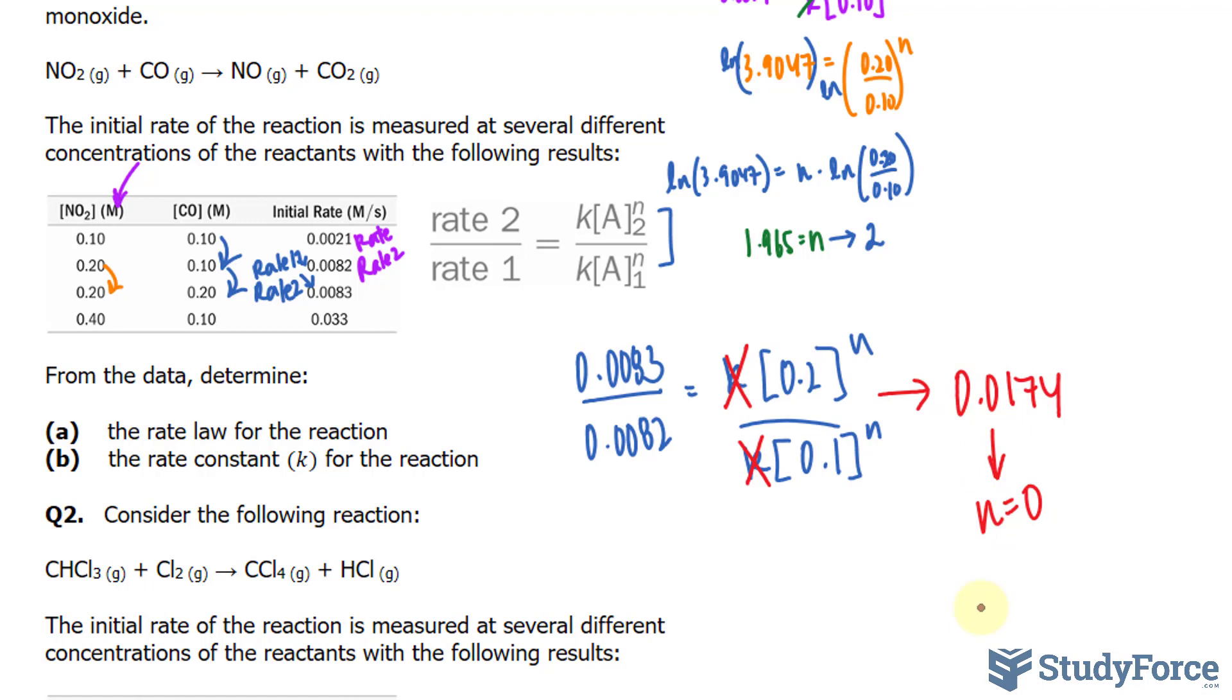Notice that this number is really small. This actually tells us that n, if we round it, gives us 0. This means that the reaction here for carbon monoxide is a zero-order reaction.